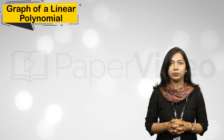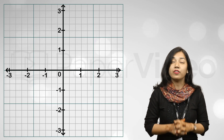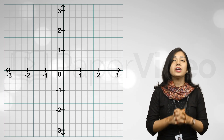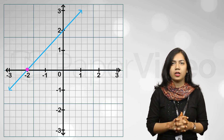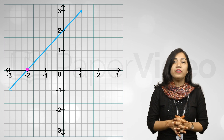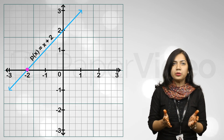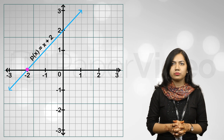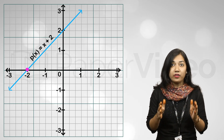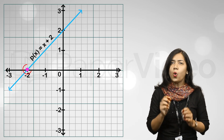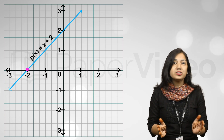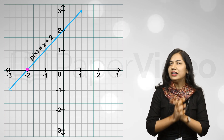Let us first understand the graph of a linear polynomial. A linear polynomial has degree 1. This means that the graph of a linear polynomial will be a straight line which intersects the x-axis only one time. For instance, this is a graph of a linear polynomial p(x) = x + 2. Clearly, we can see that the graph is a straight line and it intersects the x-axis at only one point. Such type of graphs are the general graph of a linear polynomial.